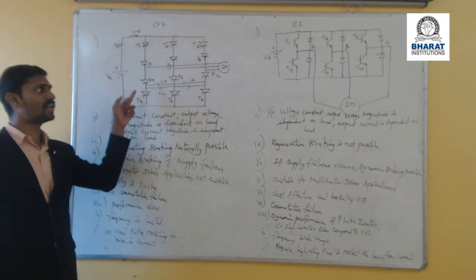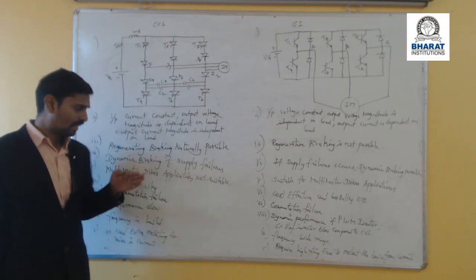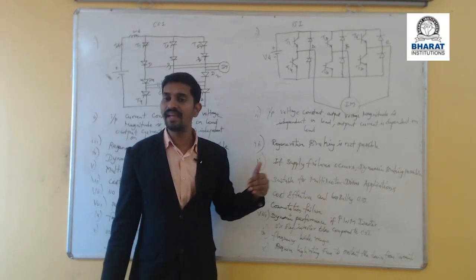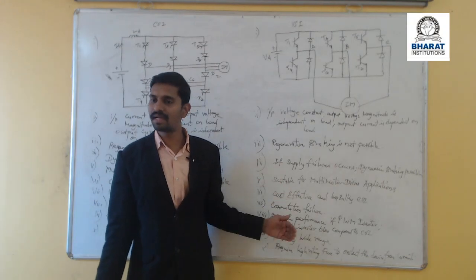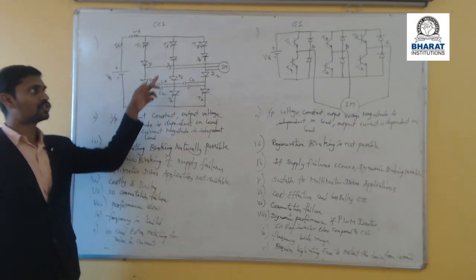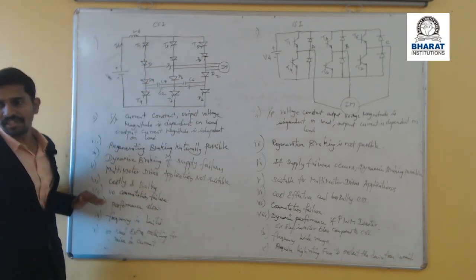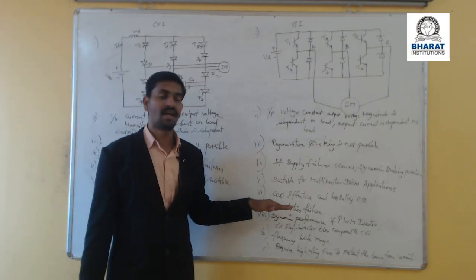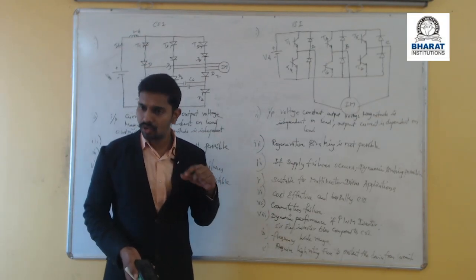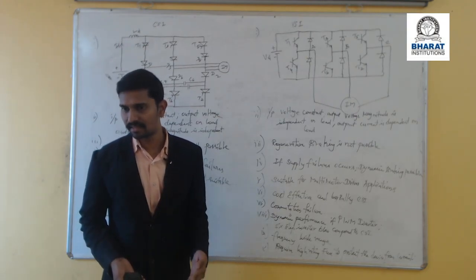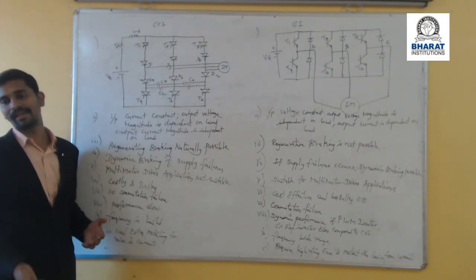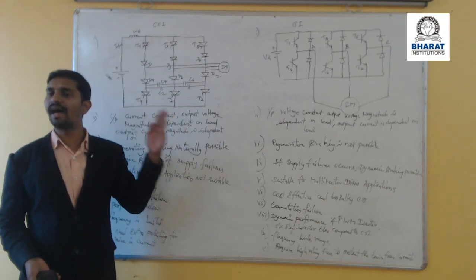Because of the inductance and capacitance, the current source inverter is costlier and bulky. In voltage source inverters, there is no capacitance or inductance, so it is less costly and less bulky than CSI. As discussed, the capacitors take care of commutation in CSI, so no commutation failures occur. In VSI, there is no capacitance for commutation, so commutation failure is possible, and extra protecting devices like fuses are needed. In CSI, the input inductance takes care of protection from high current.